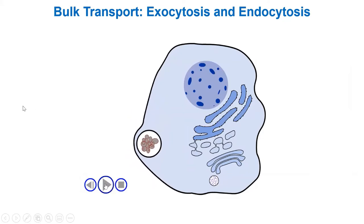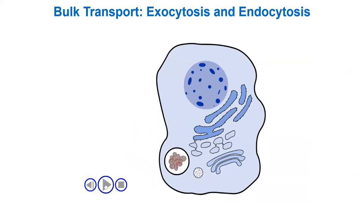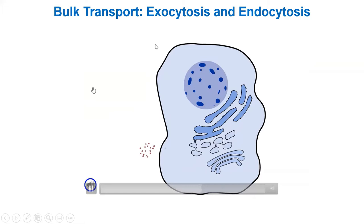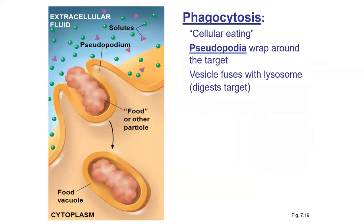Here's a video showing a white blood cell destroying some bacteria. What it has done is brought the bacteria in by endocytosis, fused the food vacuole with a lysosome, and destroyed the invader. It can also be used for eating as well, depending on the cell type.